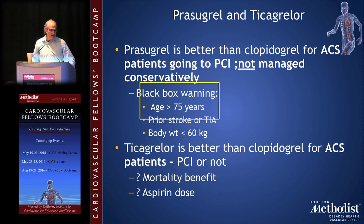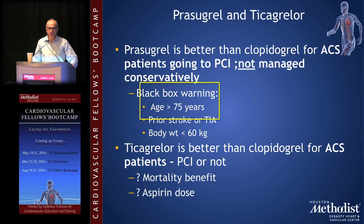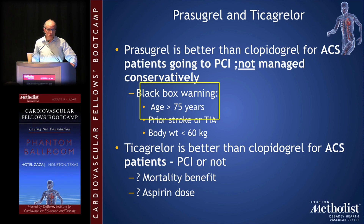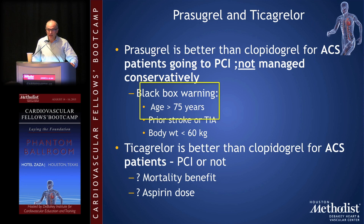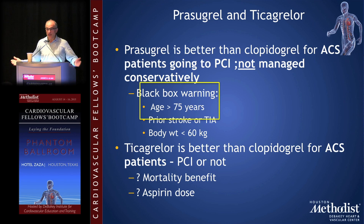Prasugrel is better than clopidogrel for ACS patients going to PCI, not managed conservatively. There is a black box warning for patients over age 75, those with prior stroke or TIA, and patients who weigh less than 60 kilograms. Ticagrelor is better than clopidogrel for ACS patients, PCI or not. There may be a mortality benefit. There's controversy about the aspirin dose, but there's no reason you ought to be giving patients 325 milligrams a day.